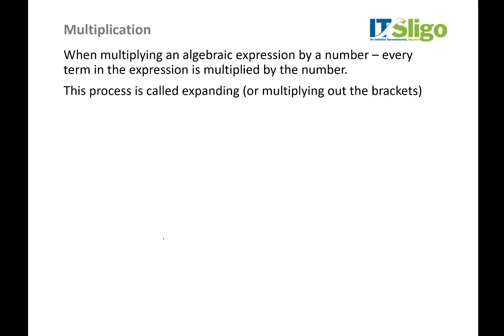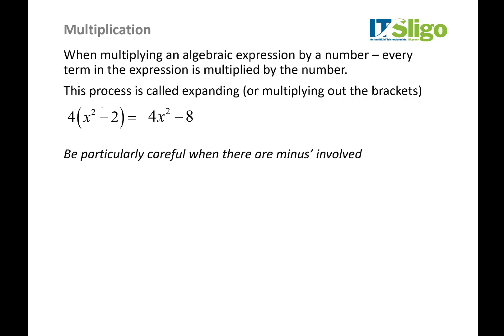When multiplying an algebraic expression by a number, every term in the expression is multiplied by that number. This is called expanding or multiplying out the brackets. So for four times (x squared minus two), the four simply comes in and is multiplied by each term individually. If there are minuses involved, be particularly careful. The same principle applies: the minus two comes in and multiplies each term, so the first term will be negative 6x squared and the second will be positive because minus times minus is a plus.